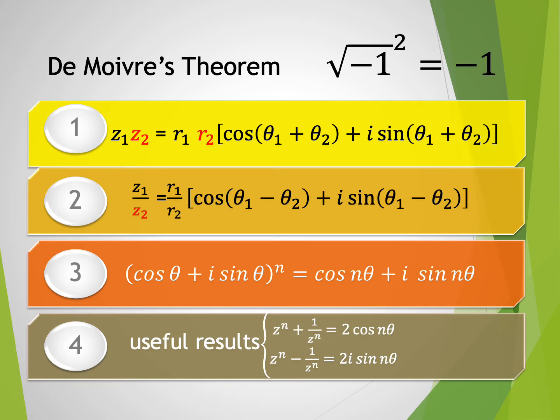Memorize that i² equals negative 1²,  that is equal to negative 1.